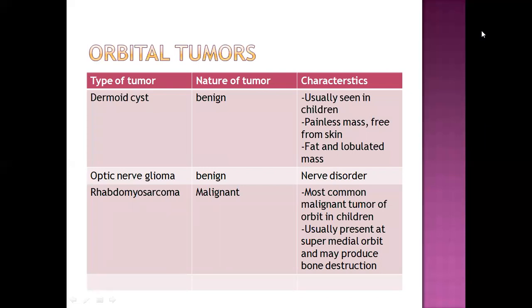Starting with orbital tumors — the first kind is dermoid cyst, which is benign and usually seen in children. It is a painless mass, free from skin, fatty and lobulated. Next is optic nerve glioma, also a benign tumor, which can result from a neurological disorder where wrong messages are transmitted to and from the brain.